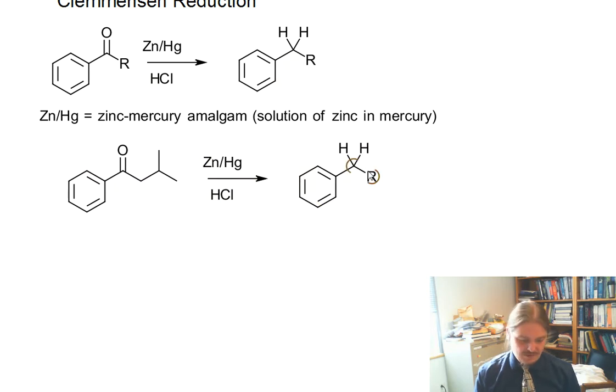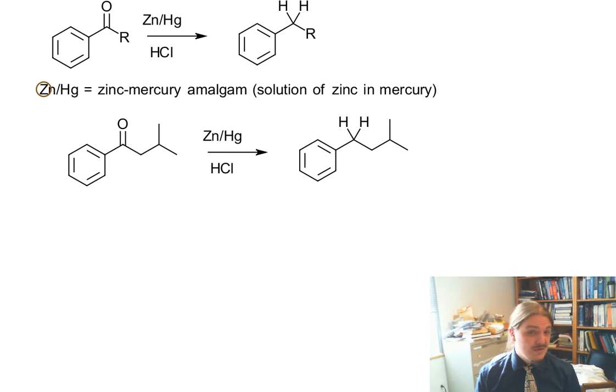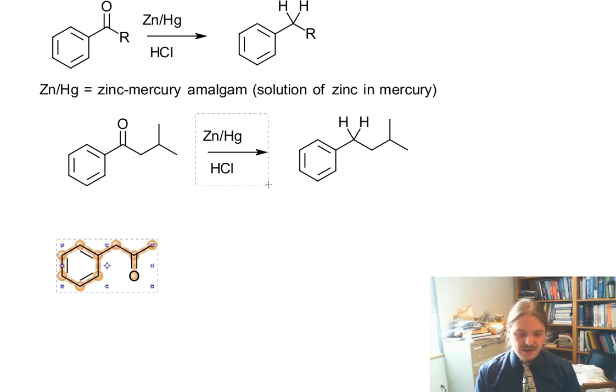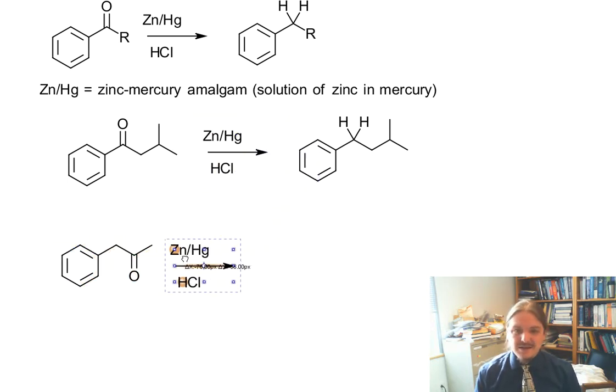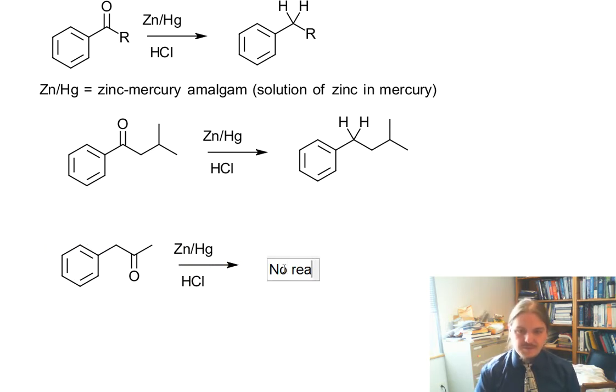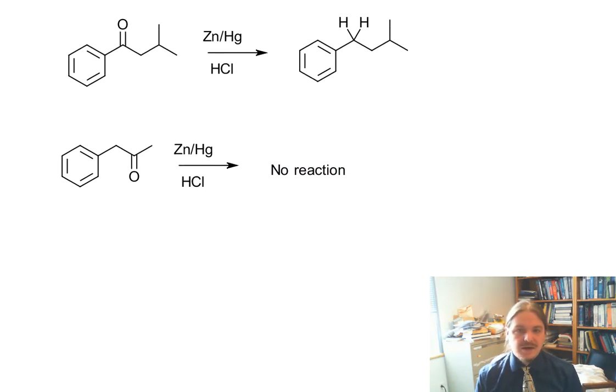Whatever alkyl group is on the other side of the ketone is preserved. If that ketone is somewhere else in the molecule, this Clemmensen reduction is not necessarily going to reduce it to the hydrocarbon.